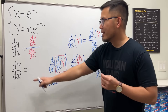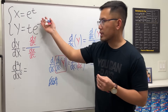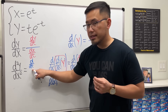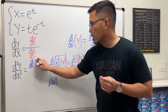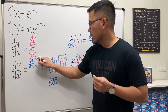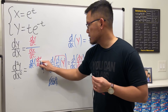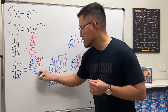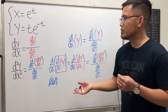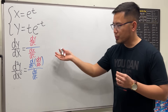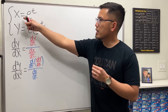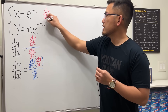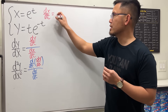Now let's come back here. d²y/dx², when we are given parametric equations, means we take the derivative with respect to t of the result we got earlier — that's dy/dx — and then divide it by dx/dt again. Now let's put this in action. We look at the x equation and differentiate with respect to t. We get dx/dt, which gives us e to the t.